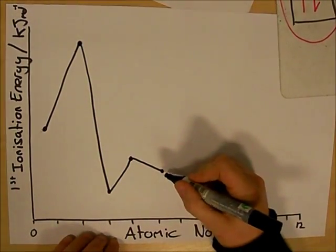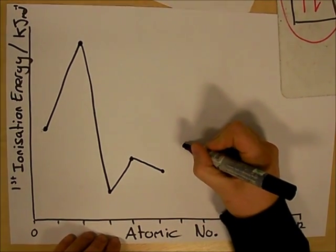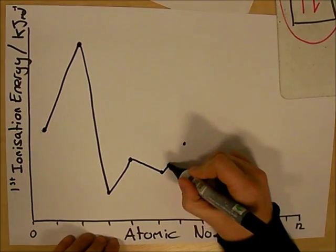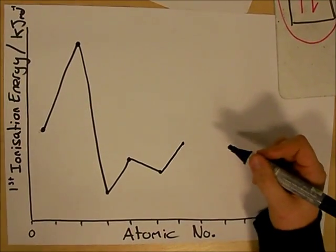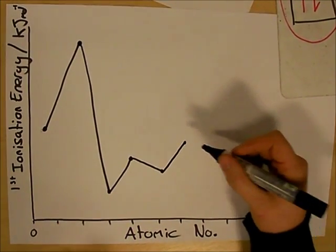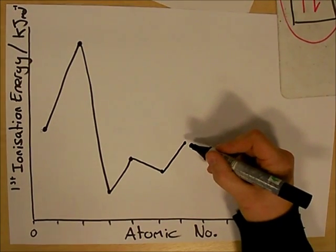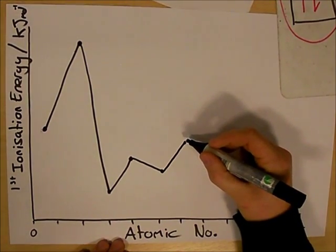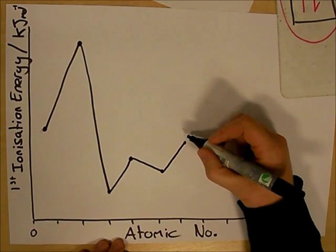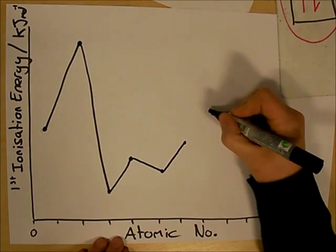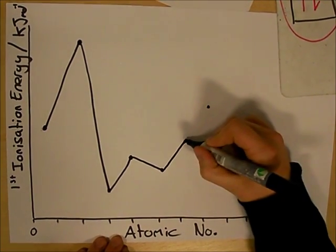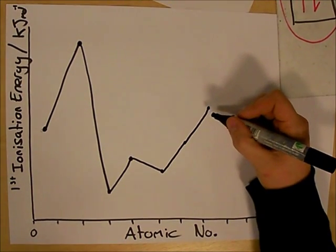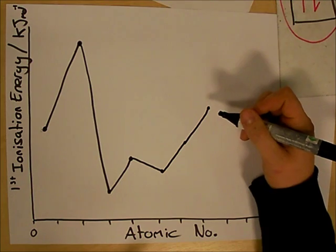Atomic number 6 again increases in ionisation energy due to increased nuclear charge, similar to atomic number 4. Increased nuclear charge, caused by an extra proton in the nucleus, causes the electrons to be held more tightly requiring more energy to remove them. Atomic number 7 shows a similar increase in ionisation energy again due to increased nuclear charge.